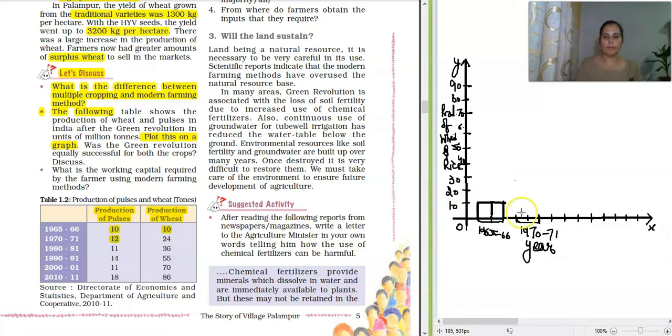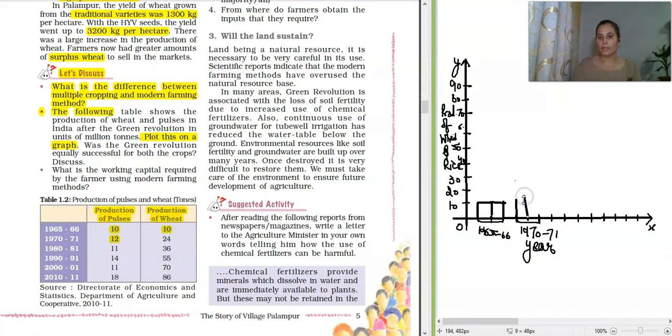Okay, here it is 12. First is 12. So we will go a little higher than 10. Okay, and then let me just make this line straight. Good. And I have covered this.